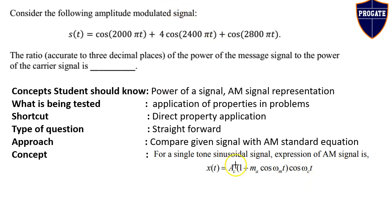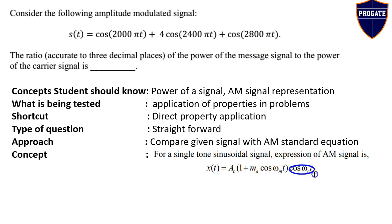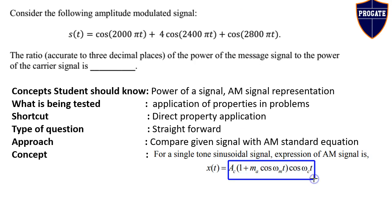Here Ac is the carrier amplitude or carrier signal voltage level, MA is the modulation index, ωc is the carrier signal frequency, and ωm is the message signal angular frequency. When a message signal cos(ωm·t) is passed through an amplitude modulator, the output is of the form Ac · [1 + MA · cos(ωm·t)] · cos(ωc·t).